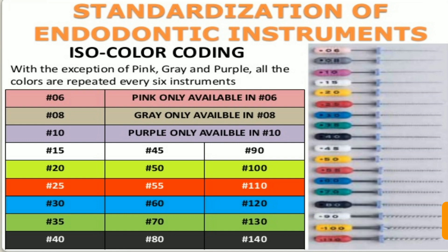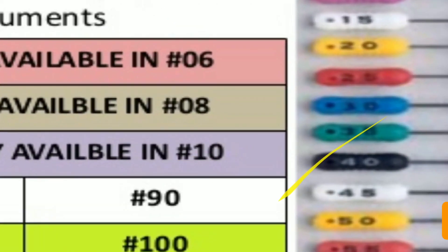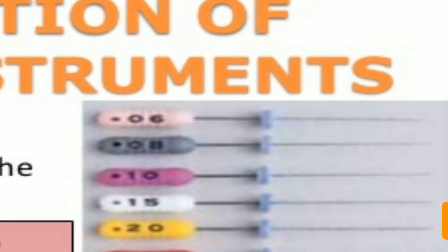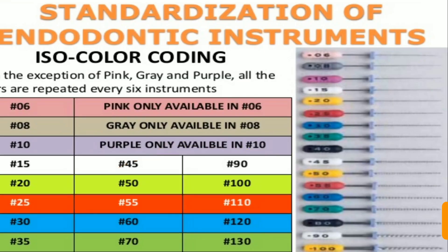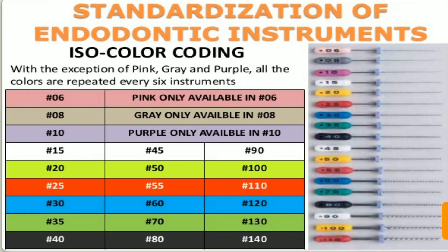Another thing to note is that the color coding repeats every six instruments in the sequence: white, yellow, red, blue, green, black — then white, yellow, red, blue, green, black again. You just have to remember six color codes. Additionally, the number 10 file is always purple, number 8 file is gray, and number 6 file is pink.